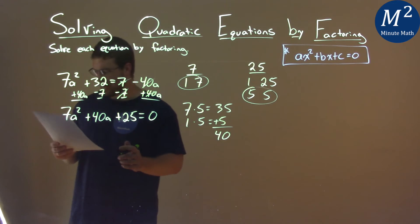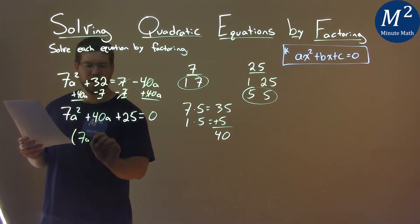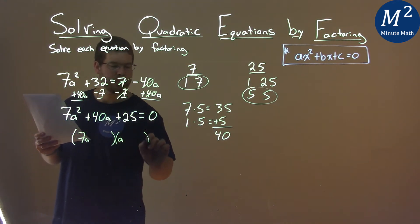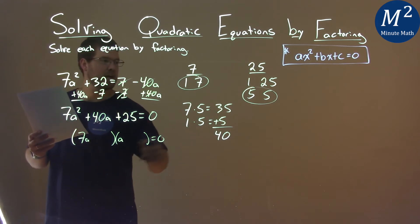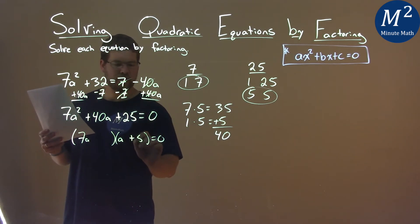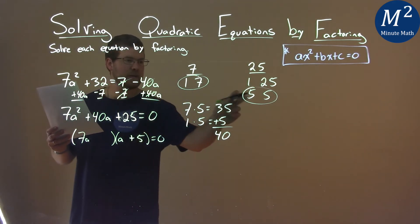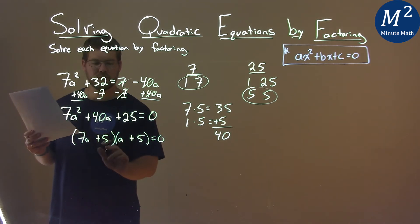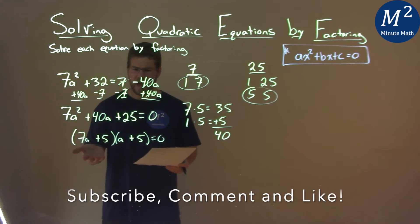Now we can factor this out. It has to be 7a here and 1a equals 0. The 7a times 5—that 5 would go here—and then 1 times the other 5 would go here.